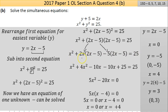Collecting like terms: x squared plus 4x squared is 5x squared; minus 10x minus 10x is minus 20x; then plus 25 equals 25. The 25 on both sides cancels — a good honours student recognises that immediately without needing to move anything. We're left with 5x squared minus 20x equals 0, which is a quadratic.